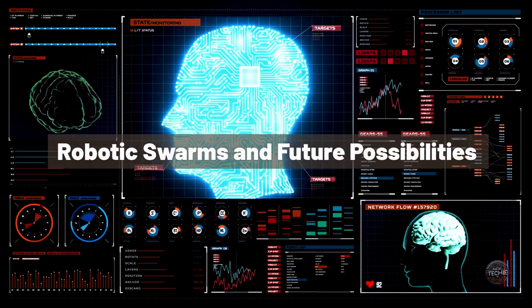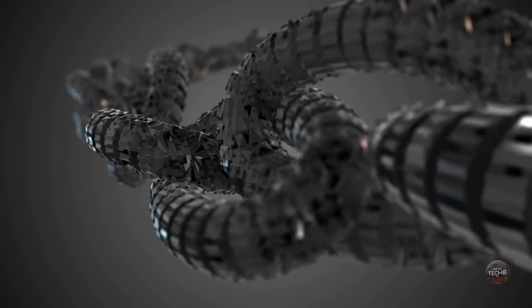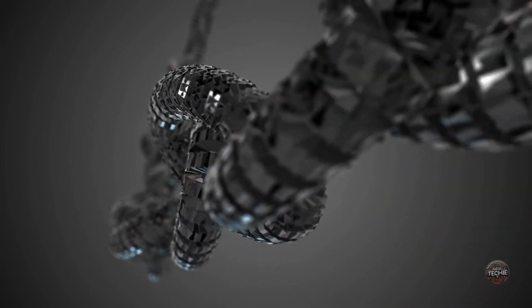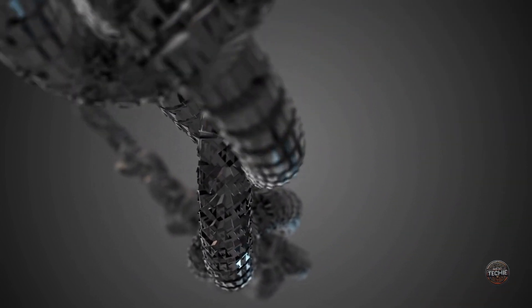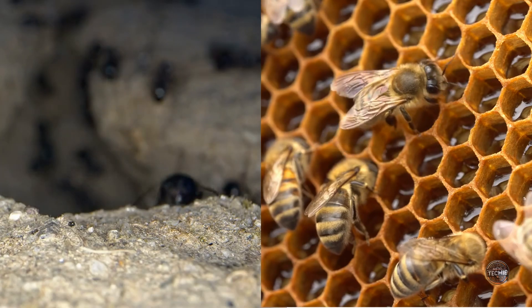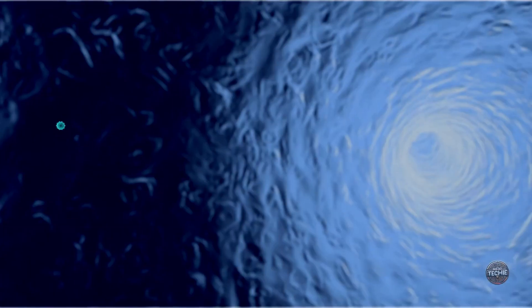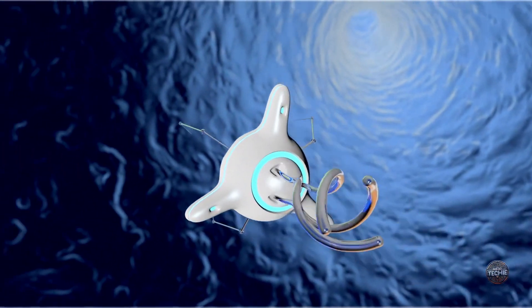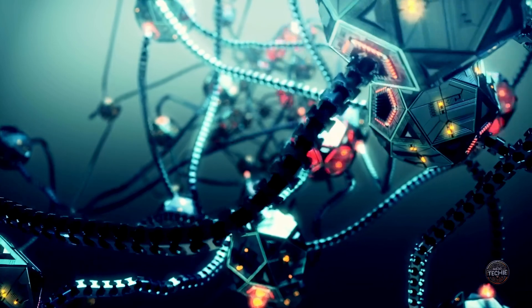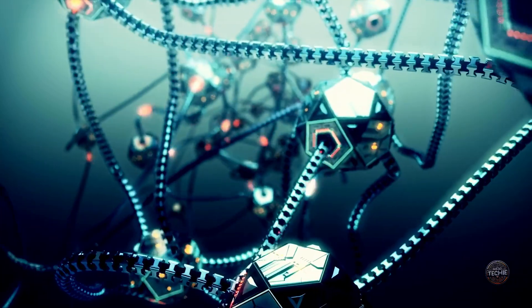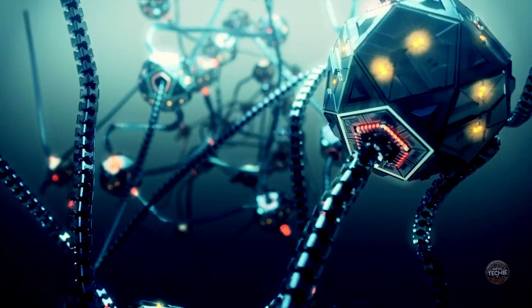Robotic Swarms and Future Possibilities. MIT researchers are also exploring how these batteries could power swarms of tiny robots, similar to how ants or bees work together. Imagine thousands of micro-robots swimming through your bloodstream, cleaning polluted rivers, or mapping underground caves. This swarm behavior allows them to accomplish tasks that are impossible for a single robot to handle.